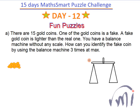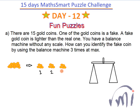First, divide the 15 gold coins into three heaps of five coins each — heap one, heap two, and heap three. Take the first and second heaps and put them on the balance machine. If one heap is lighter, the fake coin belongs to that heap. If both heaps have the same weight, the fake coin is in the third heap. This way, after the first weighing, we've identified which heap contains the fake coin.